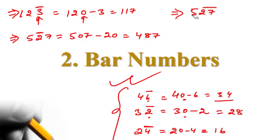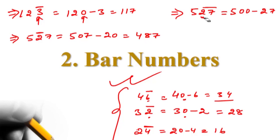Let us suppose here the bar is on the whole number — like 5, 2, 7 and 2, 7 have a bar. So we are going to write down 500 minus 27. Why? Because the bar is on both numbers, we put double zeros. So 500 minus 27 is 473. This is the answer.